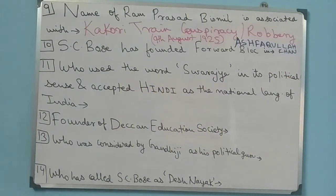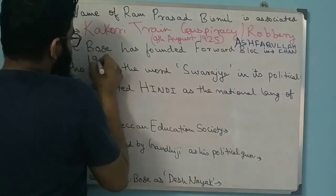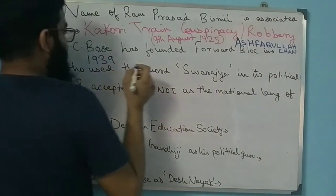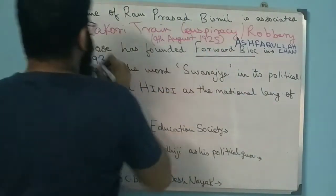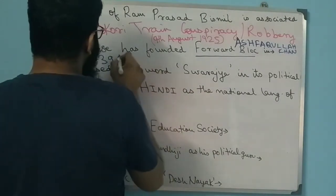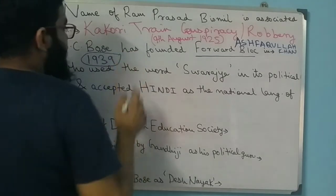Question 10: Subhas Chandra Bose founded the Forward Block in which year? The answer is 1939. This is also a very important question that repeats often. Sometimes it asks who founded the Forward Block - the answer is Subhas Chandra Bose - and sometimes it asks the year, which is 1939.